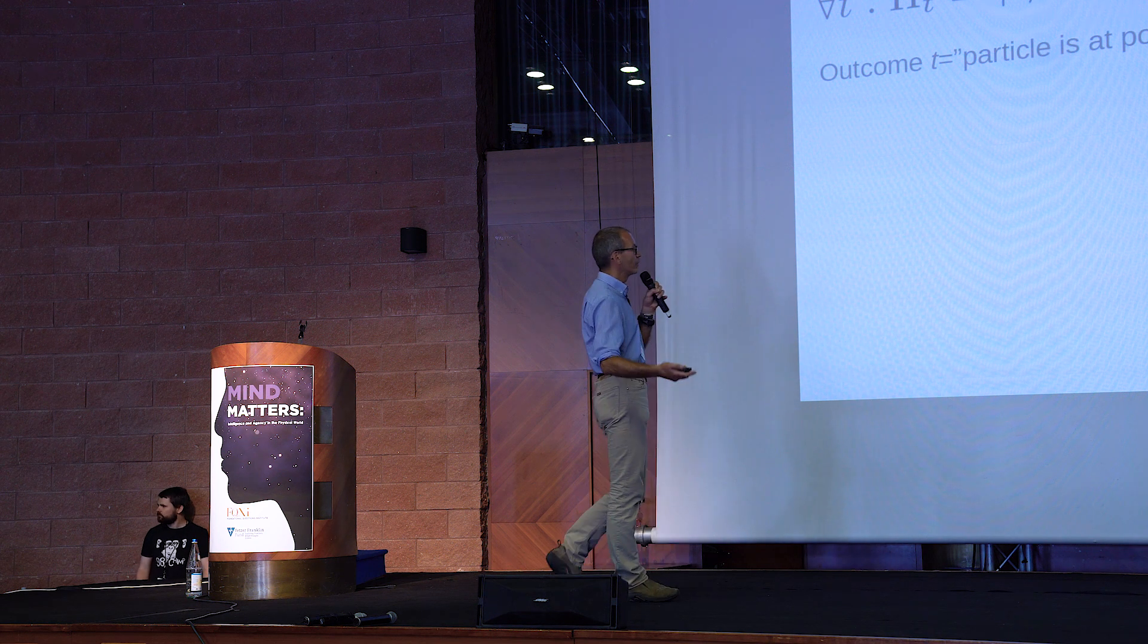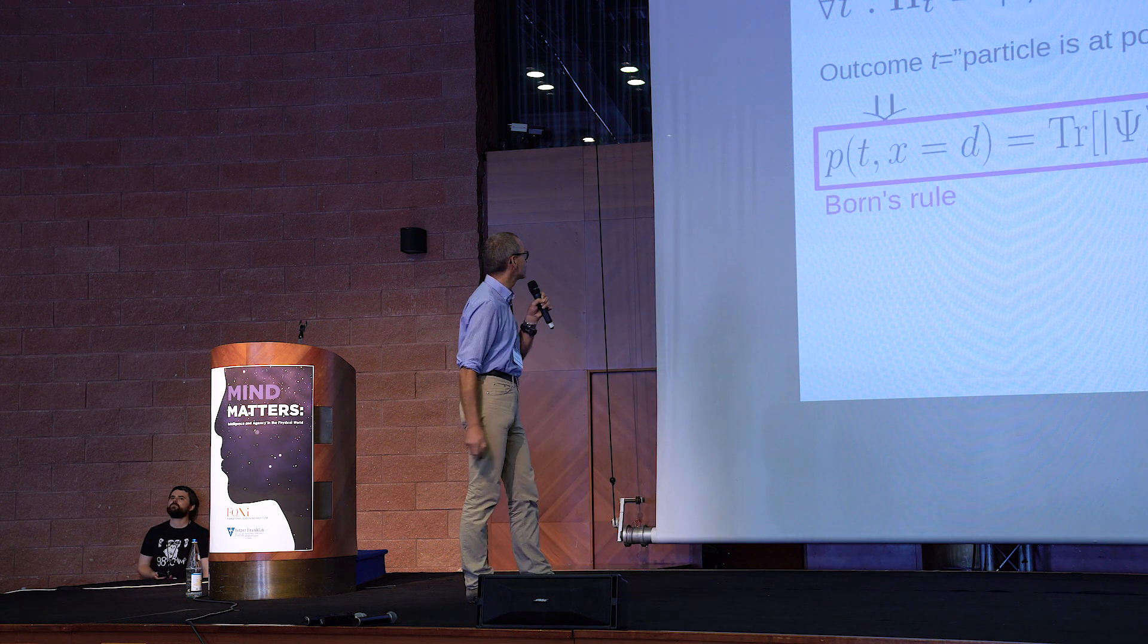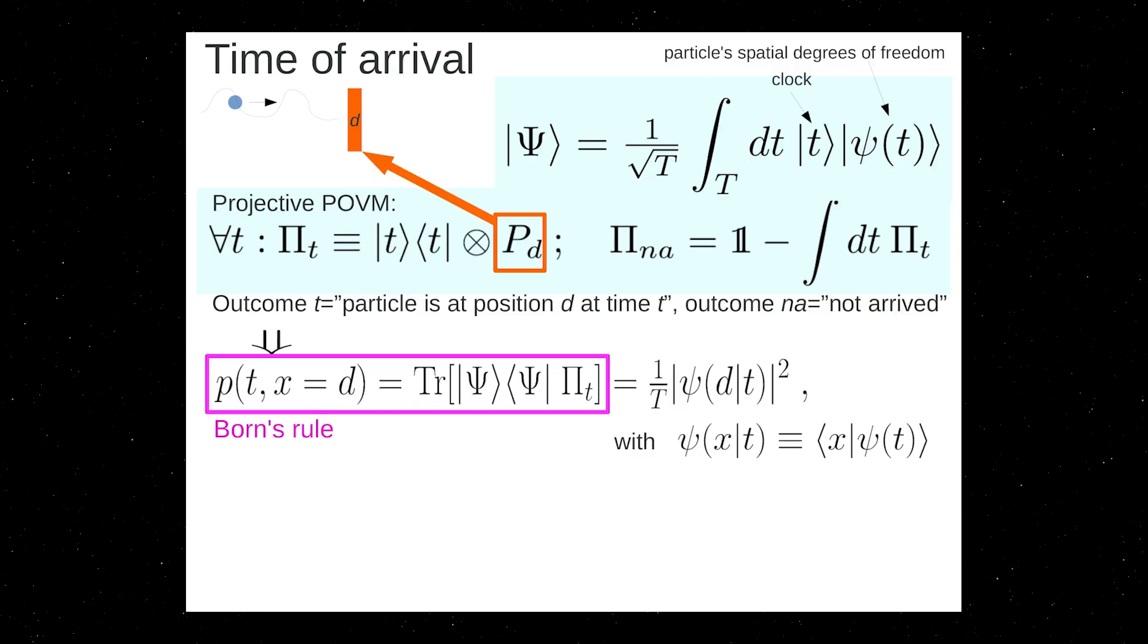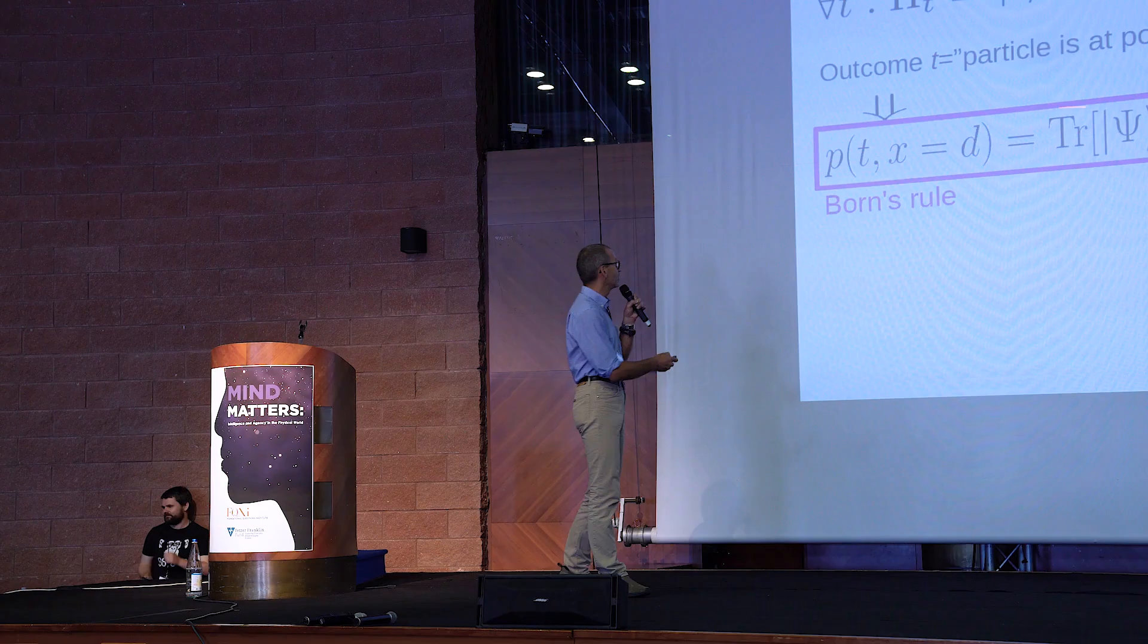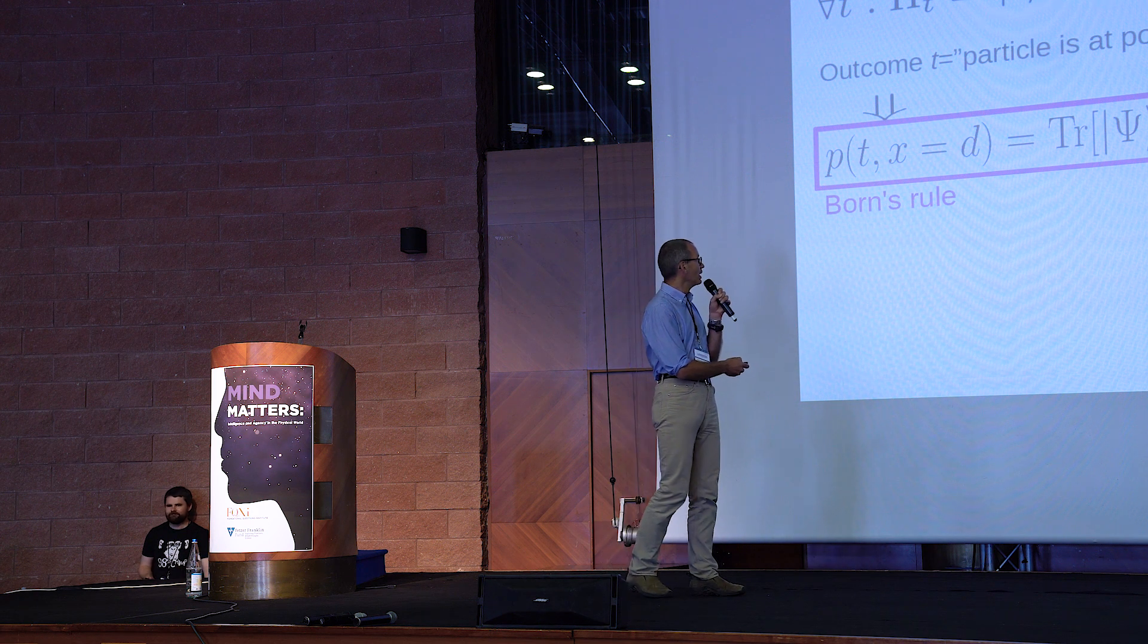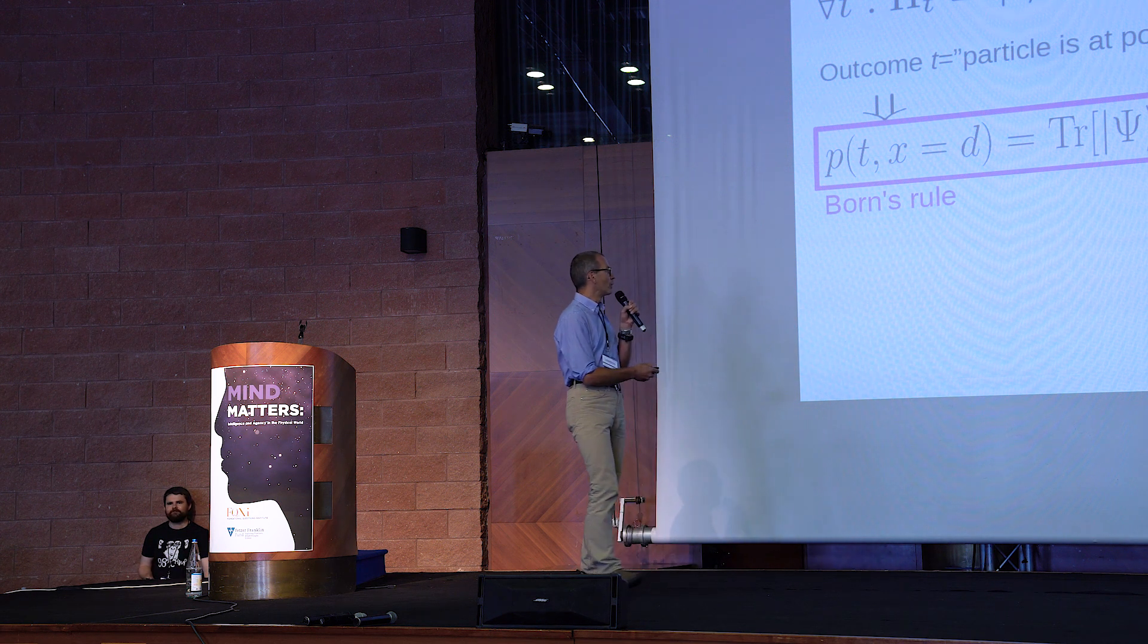Okay, now you have a POVM, you have a state, you can use the Born rule to obtain the probability distribution. This is a joint probability distribution that the time is t and that the particle is at position d. And you can see that it is obtained from the Born rule.